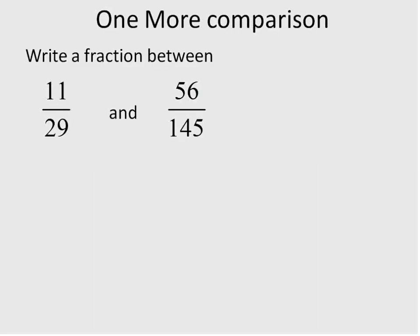One more comparison with fractions that I want to do here is when we write a fraction in between these two. When you're writing a fraction between two numbers, it makes it a little bit more complicated. You can't just convert them into decimals and compare them. What we have to do with these ones is definitely get a common denominator. The least common denominator between 29 and 145 is 145. So this fraction will remain the same, 56 over 145.